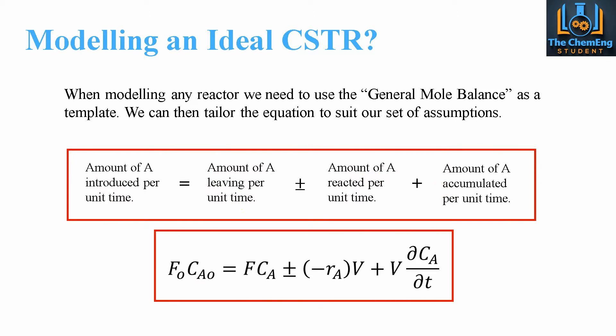Now we can rewrite this in terms of nomenclature, whereby we have F. So F₀ and F, these are the flow rates. CA₀ is for the initial concentration of A. CA is the final concentration of A. Now we have plus or minus here, because depending on whether we are reacting A or producing A, will determine whether or not this value is positive or negative.